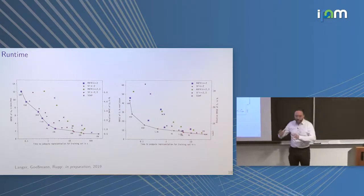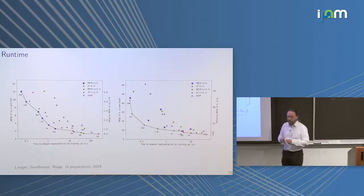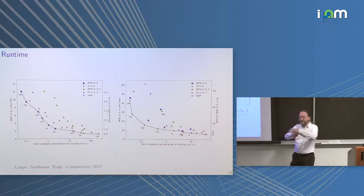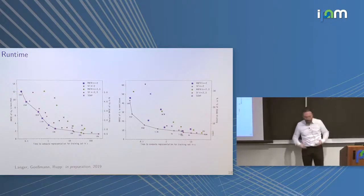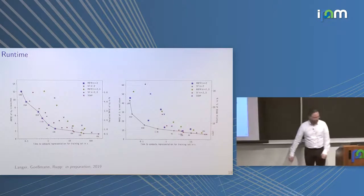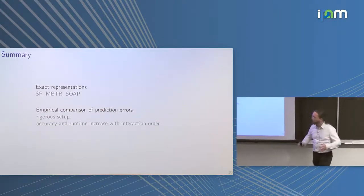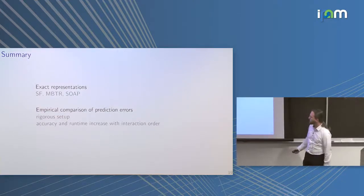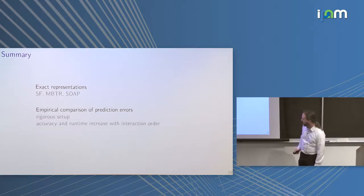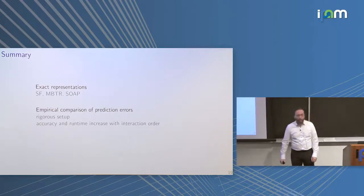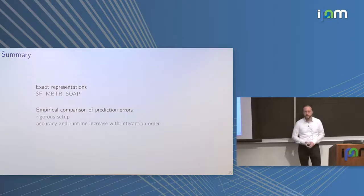To summarize Part 1: I talked about the scenario of creating surrogate models for atomistic numerical simulations, showed three state-of-the-art representations, and explained why and how we want to do benchmarking in a rigorous way. The result is that both accuracy and runtime increase with the modeled interaction order.